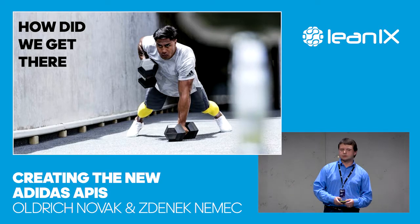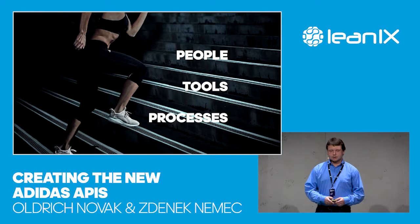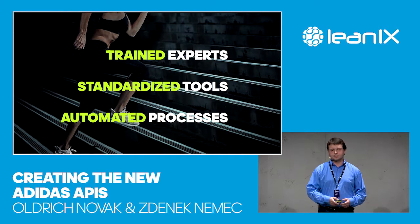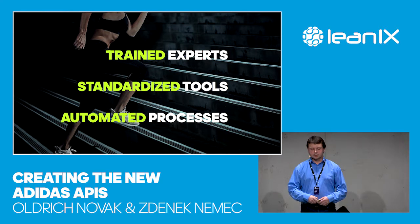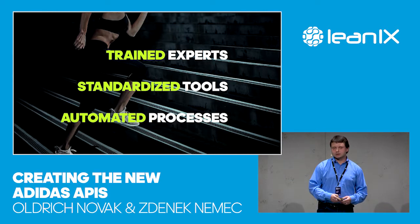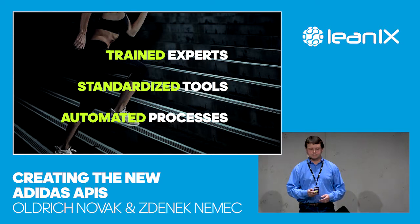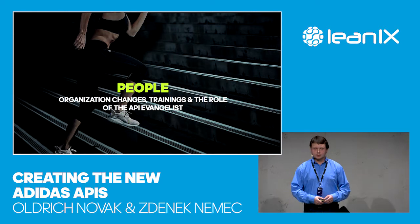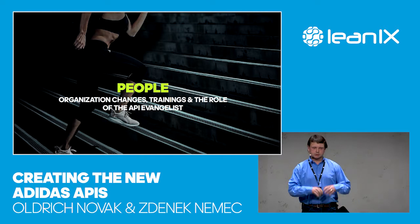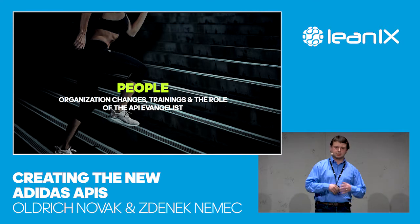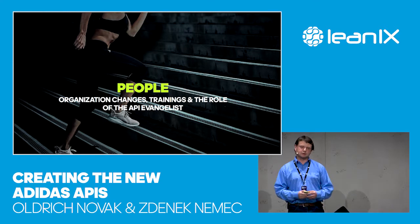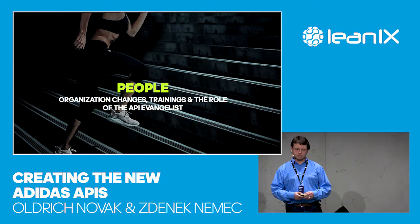Here are the things we did to get there. We looked at three pillars: people, tools, and processes. From a people perspective, we trained experts. From tools, out of hundreds of tools, we standardized them. And we tried to automate the processes as much as possible. From the people perspective, like Michael said, we restructured ourselves into DevOps teams built around the product. We see APIs as a kind of product. With this restructuring and having small DevOps teams, we can always find the owner of an API.